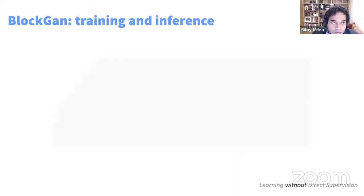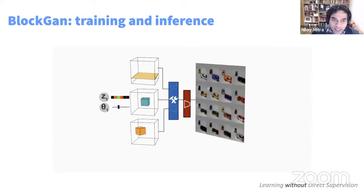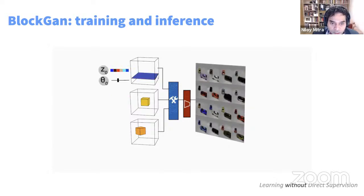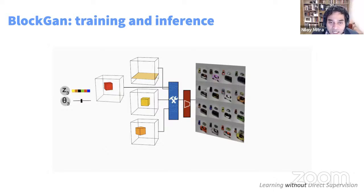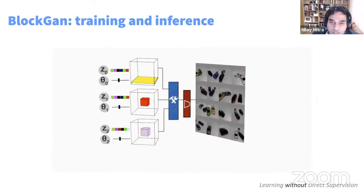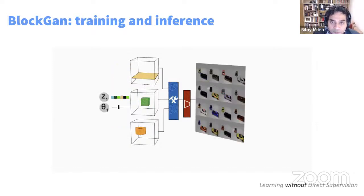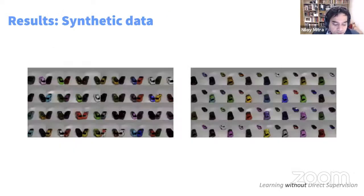At training time, this is unsupervised — we give it a random sample of backgrounds and objects. At inference time, we can change the object and background descriptions, move individual objects since we've inferred their locations, and add new objects. No supervision is needed other than a good distribution of these variants in the input data.